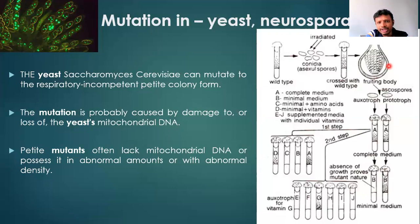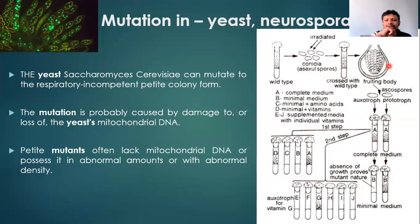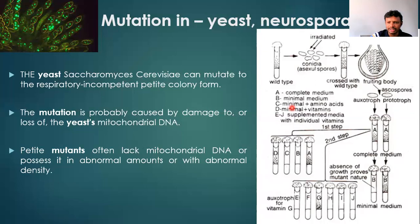Auxotrophs cannot prepare the necessary amino acids or ingredients required for their survival, whereas prototrophs generally have the genes for that. We have to identify these auxotrophs and prototrophs and cross them with each other to find the inheritance pattern with respect to nuclear or mitochondrial material. We can also prepare auxotrophs or prototrophs ourselves by radiating them or giving them mutagenic compounds — similar to the Ames test in bacteria, the same can be applied to yeast or Neurospora.